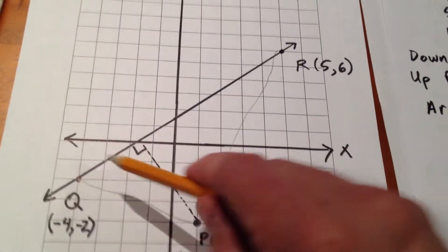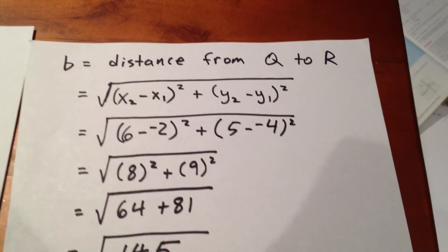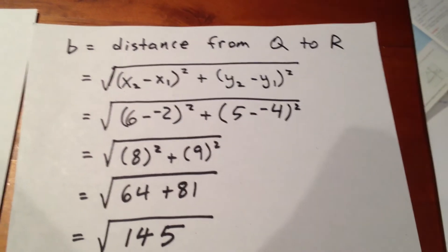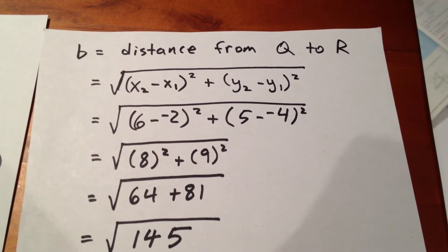Well, the length of the base is simply the distance from point Q to point R. So how are we going to figure that out? Well, we use the distance formula. x2 minus x1, quantity squared, plus y2 minus y1, quantity squared.